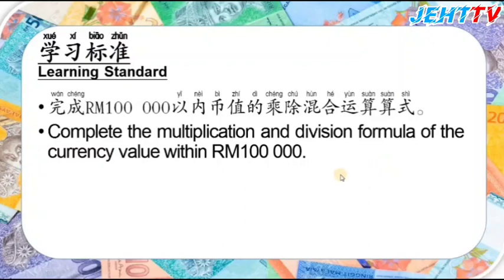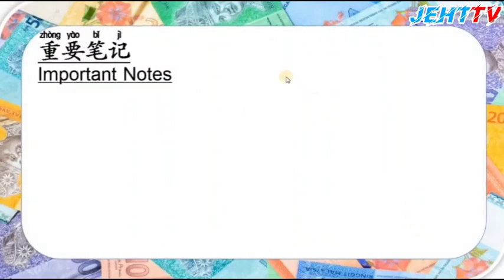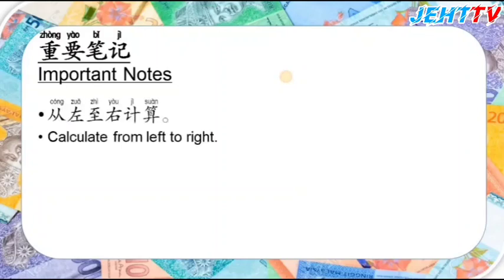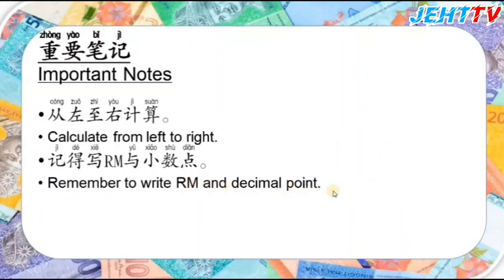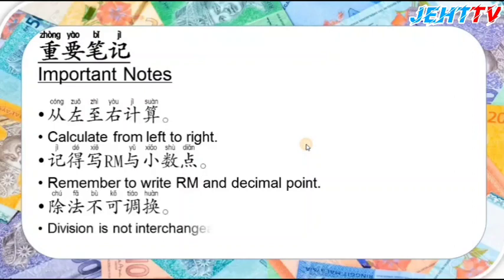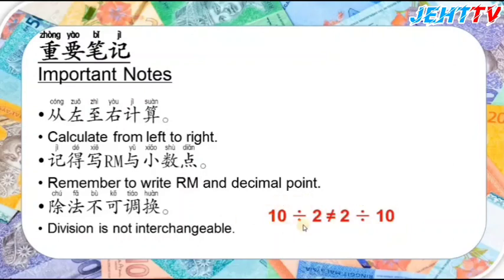The currency value is within 100,000 Ringgit Malaysia. There are three important notes. First, we need to calculate from left to right. Second, remember to write down the Ringgit Malaysia symbol and decimal point — this is very important. Third, division is not interchangeable. For example, 10 divided by 2 is not the same as 2 divided by 10.